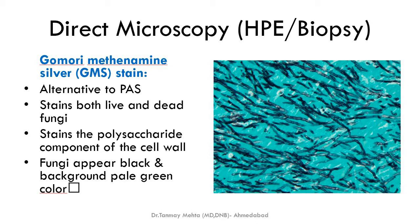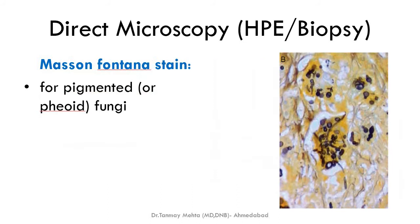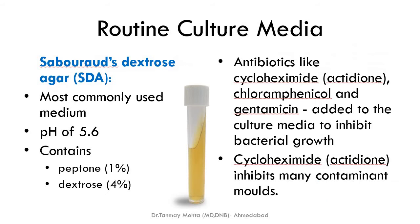GMS is an alternative to PAS; it can stain both live and dead fungi and stains the polysaccharide component of the cell wall. Fungi appear black against a pale green background. The third histopathological stain is mucicarmine stain, specially used for Cryptococcus and Rhinosporidium — its carminophilic cell wall stains dark pink. Masson-Fontana stain is mainly used for pigmented fungi, which appear brown or black.